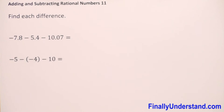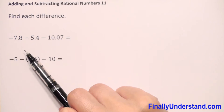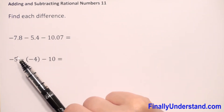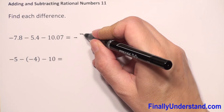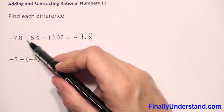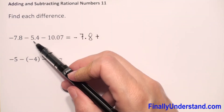We have subtraction of rational numbers. We use the same rule as for subtracting integers: we change subtraction to addition of the opposite. So we copy the first number, negative 7.8, change subtraction to addition, and the opposite of 5.4 is negative 5.4.